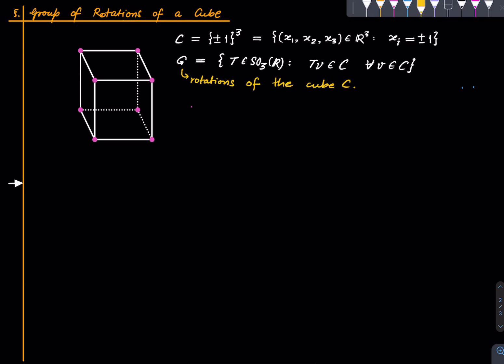One can see that G is finite, simply because a linear map is completely determined by its behavior on the vectors in C, since those vectors span the entire three-dimensional space. A very crude upper bound on the size of G is 8^8, which equals 2^24 — a huge number. But we can do much better.